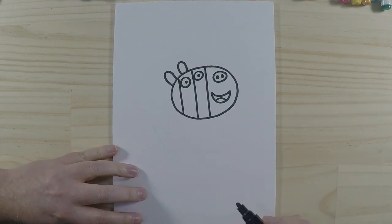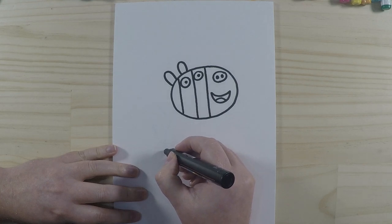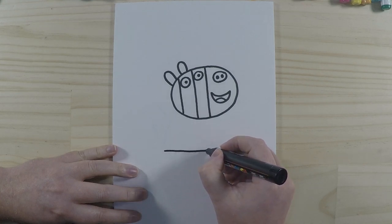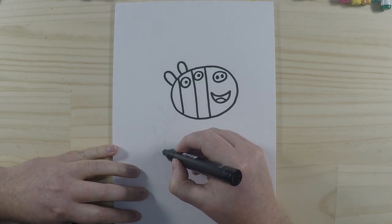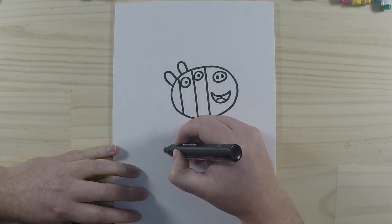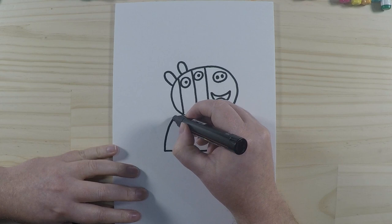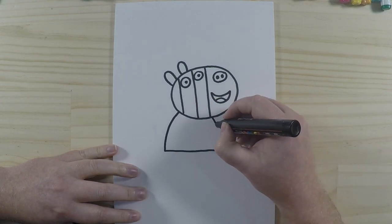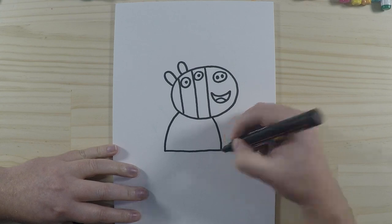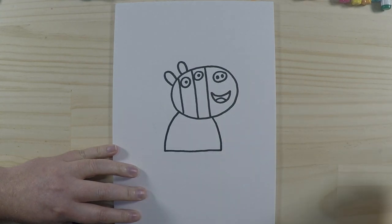Next part is we'll draw her body. So we'll start off with a straight line along the bottom here like this. And I'm going to join this line up here to her head and we do that with a nice round curve like that, and then do the same on the other side. Okay, so let's draw her arms and her hands.